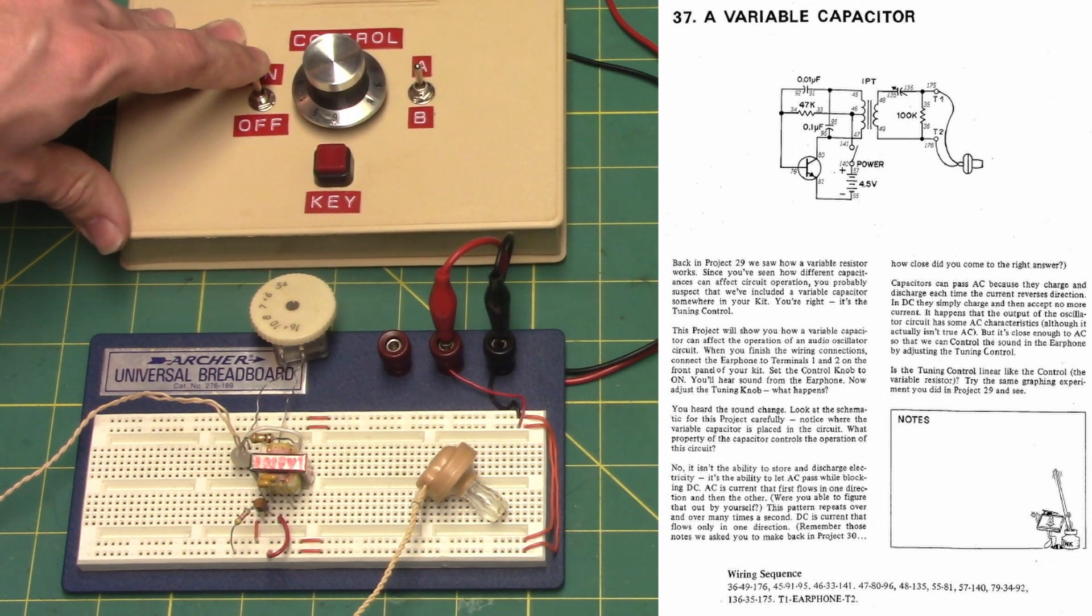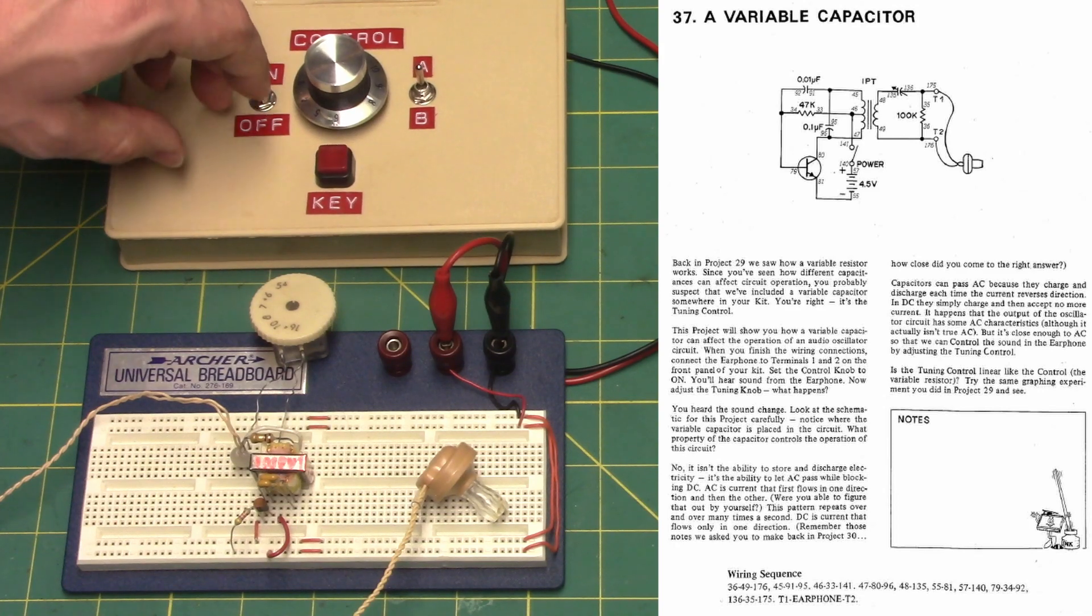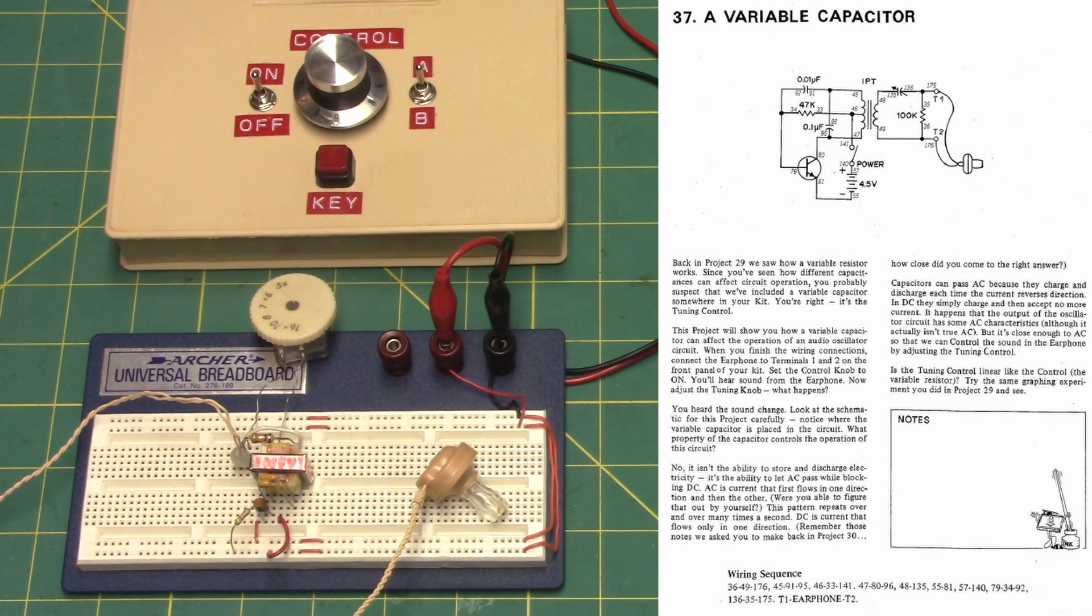Capacitors can pass AC because they charge and discharge each time the current reverses direction. In DC, they simply charge and then accept no more current.